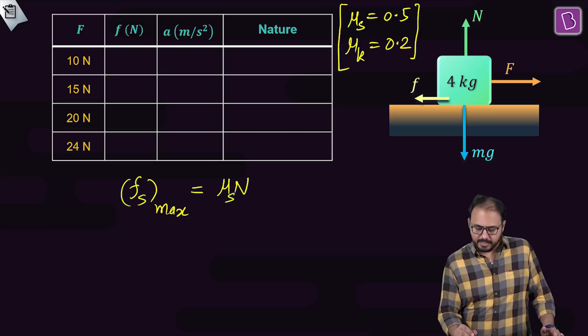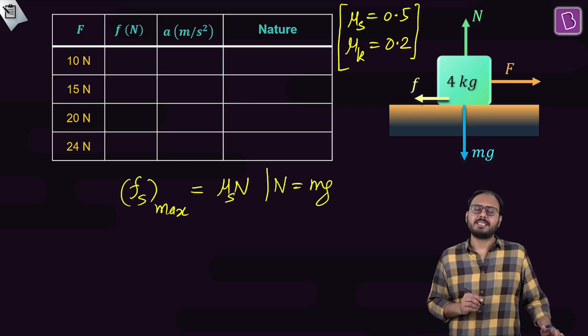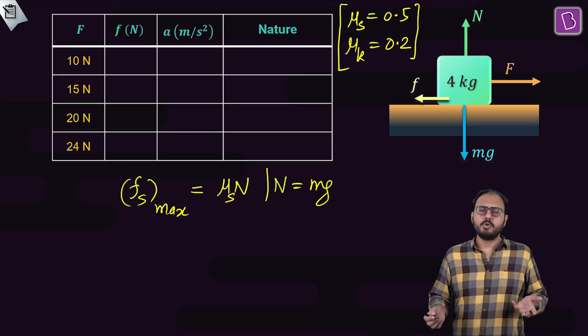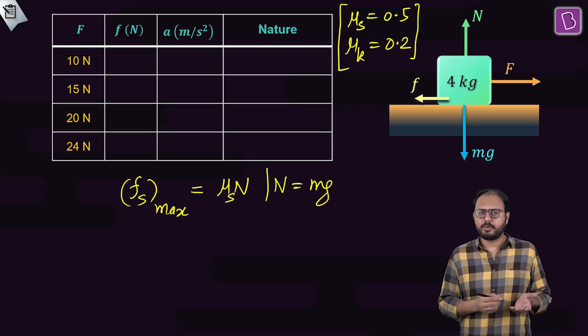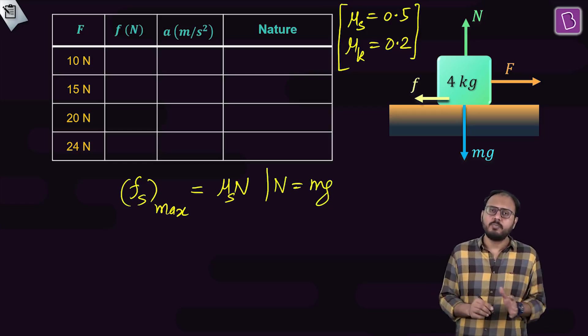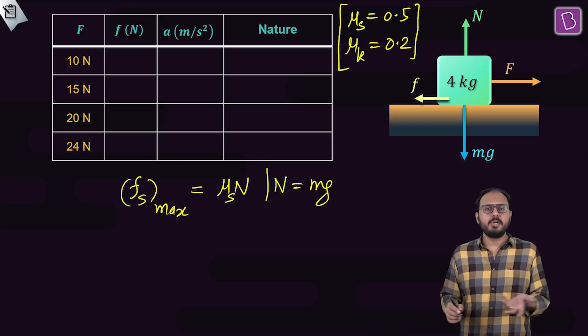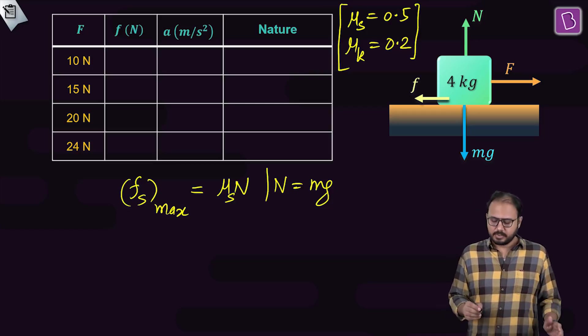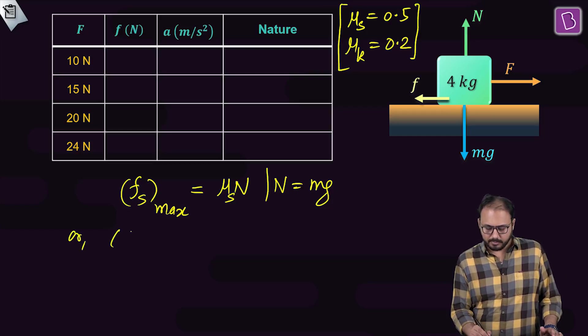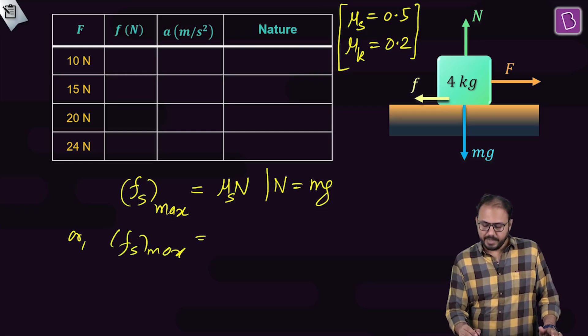Yes. Do you also agree that the normal reaction is equal to mg in this case? In fact, for vertical motion, there is no motion happening in a vertical direction for the block, whether it stays at rest or moves. The constraint is it moves along only horizontal. So N is equal to mg.